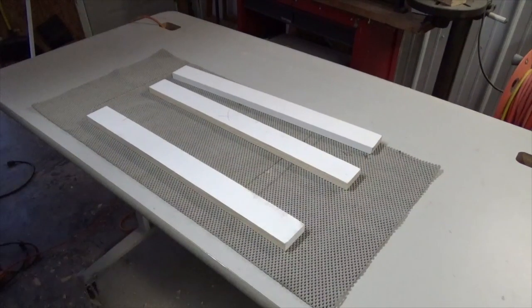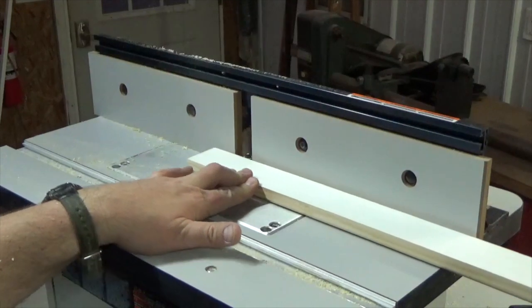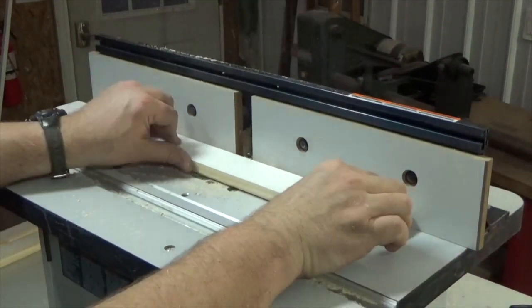These rungs are the 2 foot 1x3s. With the use of a router or a router table, round the edges off these pieces.